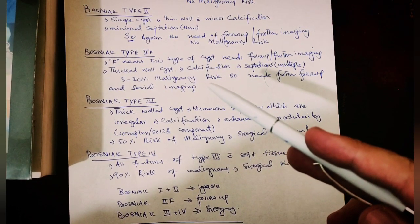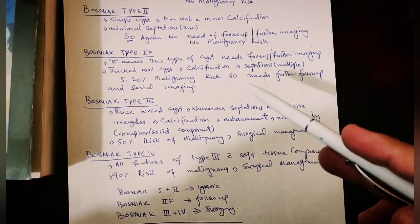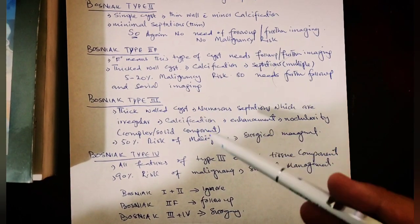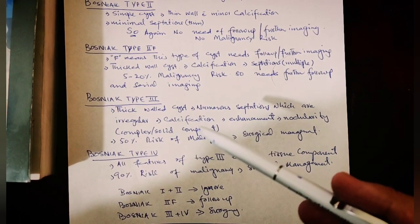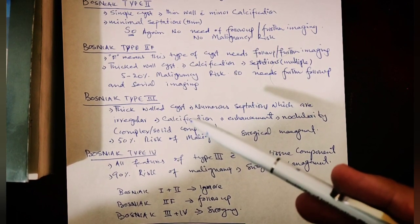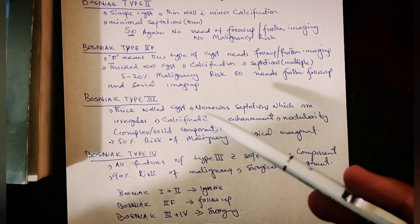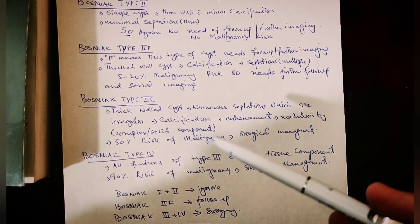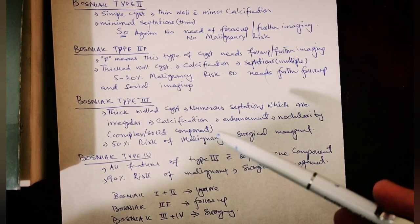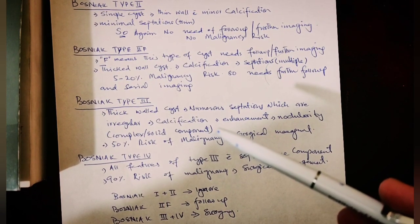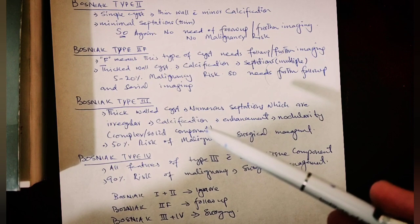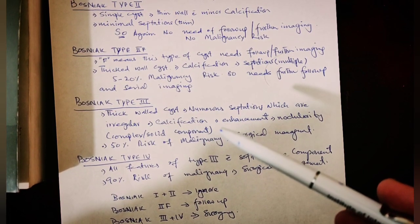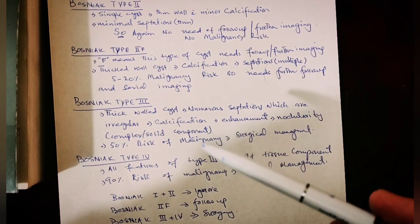Type III Bosniak cyst needs further follow-up and serial imaging. The characteristics are that such cysts are thick-walled, there are numerous septations which are irregular, and there are calcification, nodularity, and enhancement. Nodularity means that there is a complex solid component as well. Since these features are malignant, there is a 50 percent risk of malignancy.